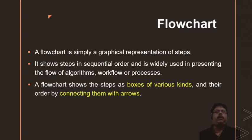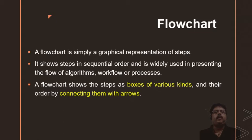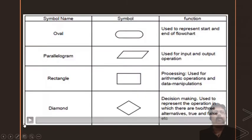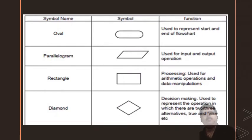The flowchart has got various kinds of boxes, and these are connected with arrows. Now let us understand what these symbols are which we are using in flowchart. Here in this video, we can see different symbols used in flowchart.